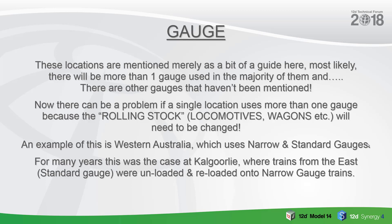There can be a problem if a single location uses more than one gauge, because the rolling stock — which is the locomotives and wagons, etc. — will need to be changed from one gauge to another. An example of this is in Western Australia, which uses narrow and standard gauges. For many years this was certainly the case at Kalgoorlie, where trains from the east, which used standard gauge, were unloaded and then relayed onto narrow gauge trains at the Kalgoorlie station.